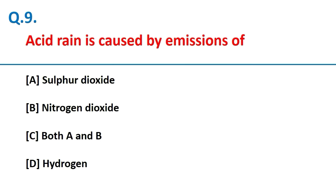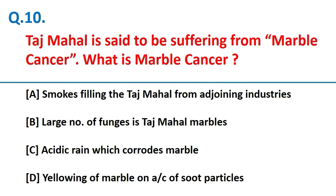Acid rain is caused by emissions of sulphur dioxide and nitrogen dioxide. The Taj Mahal is said to be suffering from Marble Cancer. Marble Cancer refers to acid rain which corrodes marble.